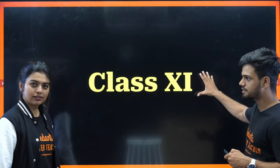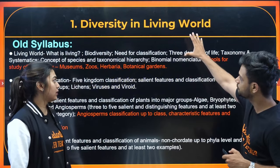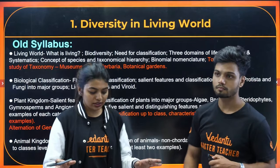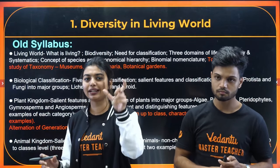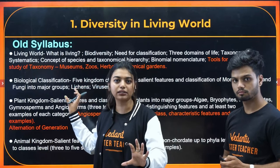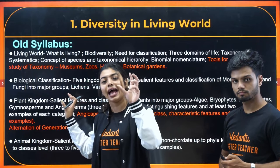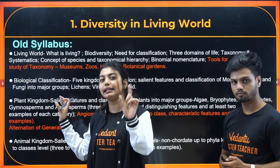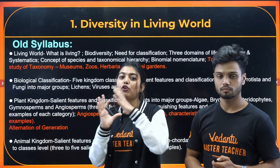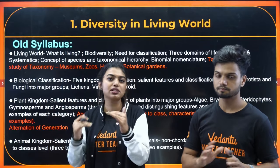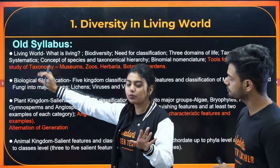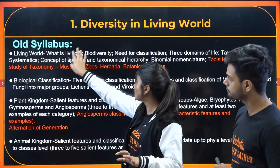That is the first unit: Diversity in Living World. Before we start, the red color marks indicate the deleted topic — that is the pattern we are following. Green color indicates anything added. We will tell you exactly if you have to follow old NCRT or new NCRT for certain topics. The first chapter is Living World — what is living?